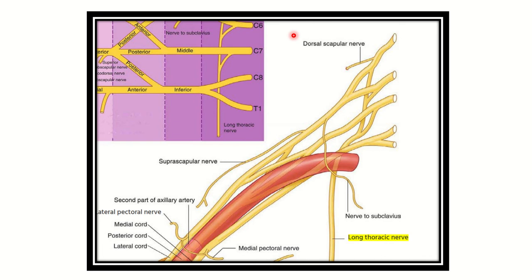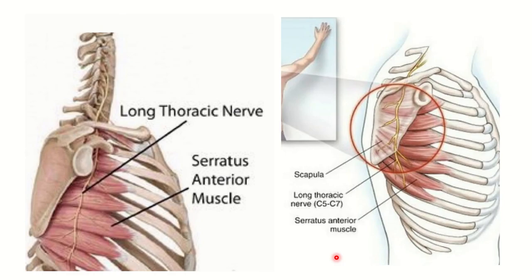So cervical five, six, and seven are the nerve root values of the long thoracic nerve. Another nerve arising from the root is the dorsal scapular nerve. Two branches arise from the root of the brachial plexus: the long thoracic nerve and the dorsal scapular nerve. The dorsal scapular nerve has a root value of cervical five, while the long thoracic nerve has root values cervical five, six, and seven.